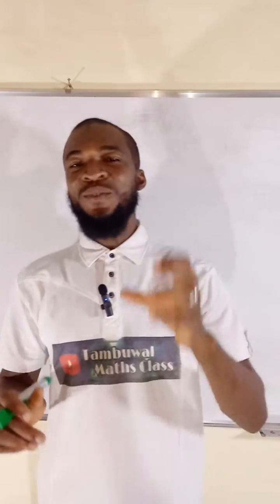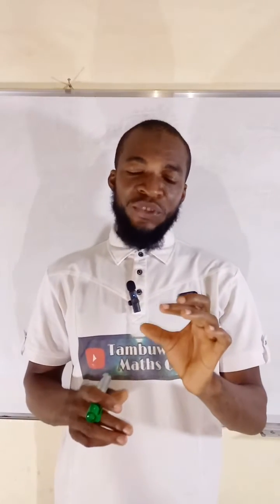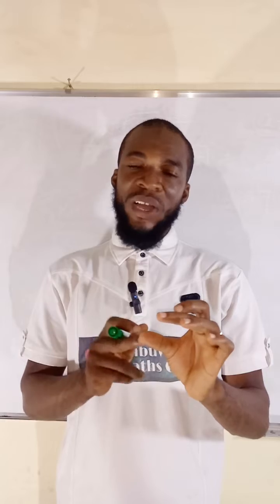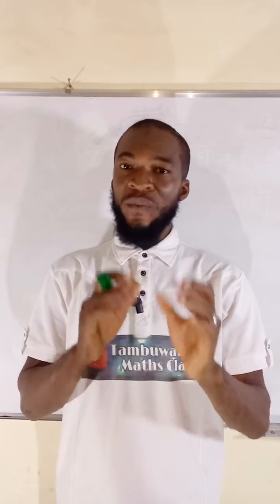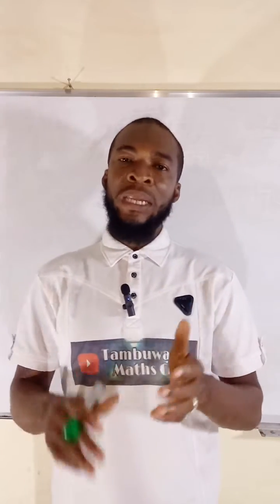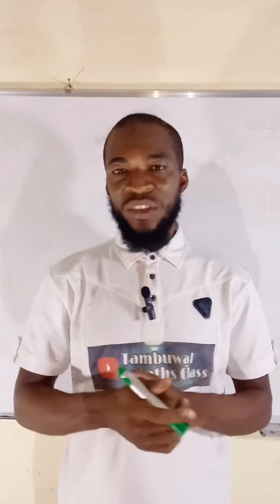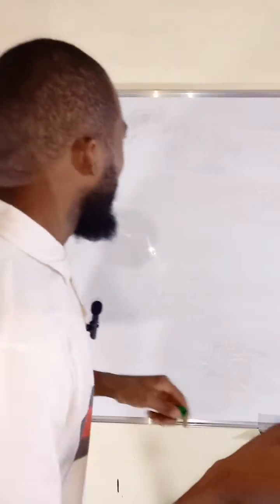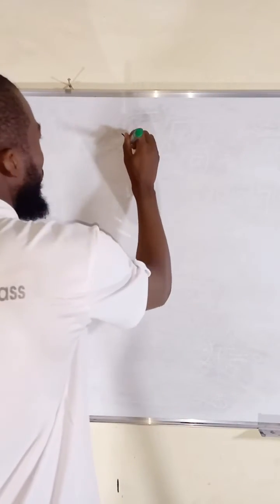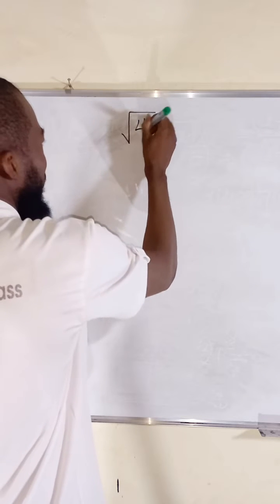Hello, good day viewers. This tutorial is for the kids. Let me show you a very simple way to find the square root of non-perfect square numbers applying prime factorization. I'm going to give you only one example. Suppose we want to find the square root of 45.